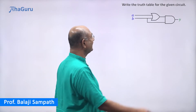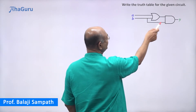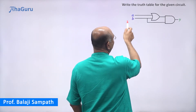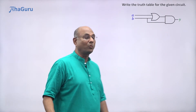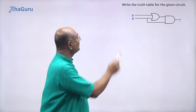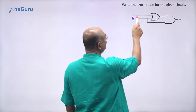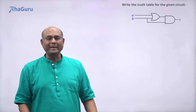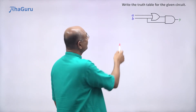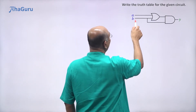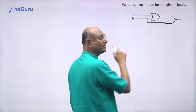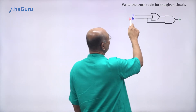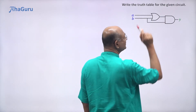In this question we have been given a logic gate circuit. There are two inputs A and B, and one output Y. We want to write the truth table for this given circuit. A truth table means we look at all possible combinations for A and B, and then for each of those combinations we write down what is the value of Y.